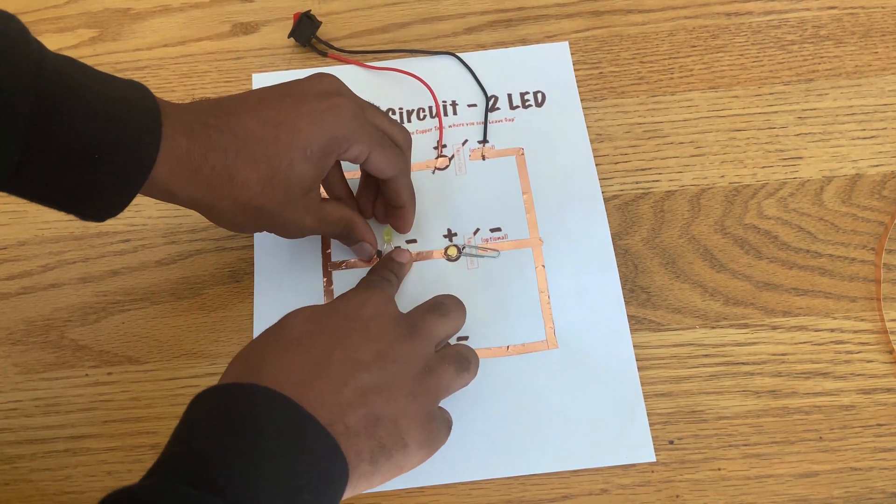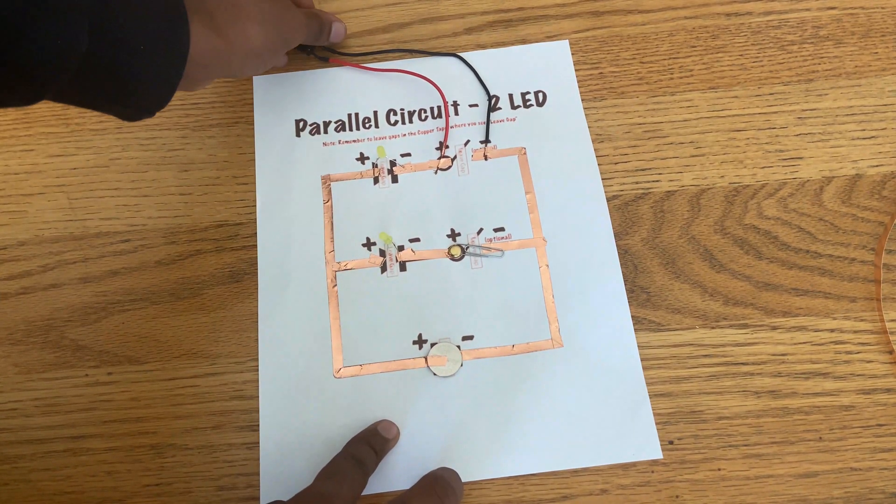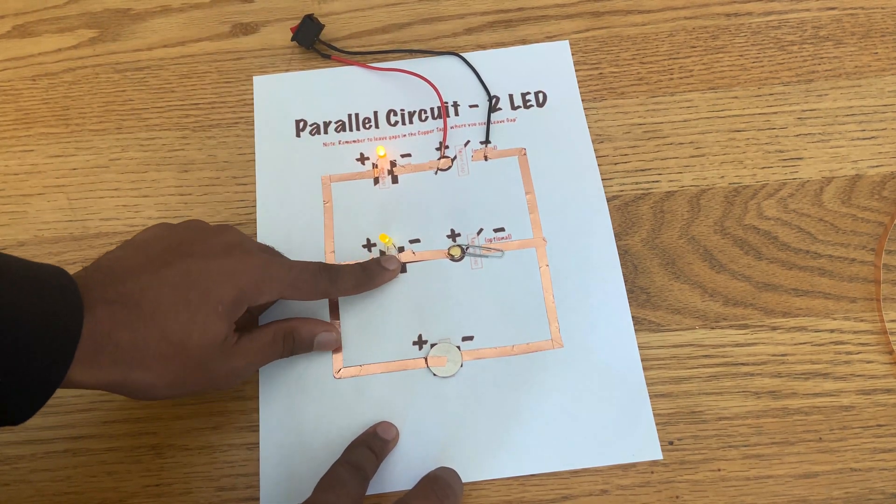Check it out. One 3-volt battery lights two LEDs that need 2 volts to work. Why is that?